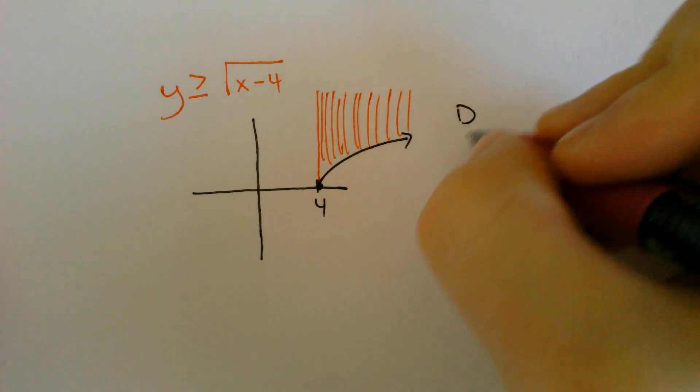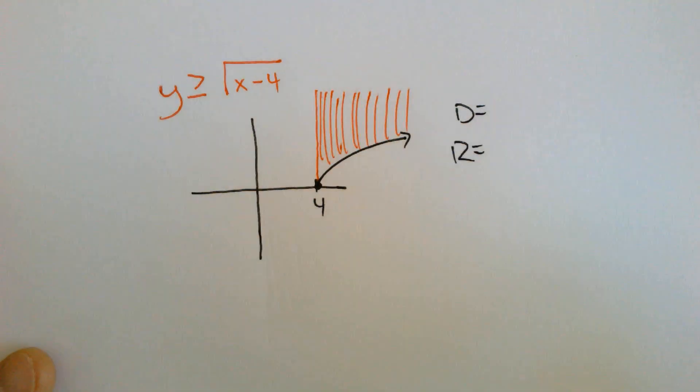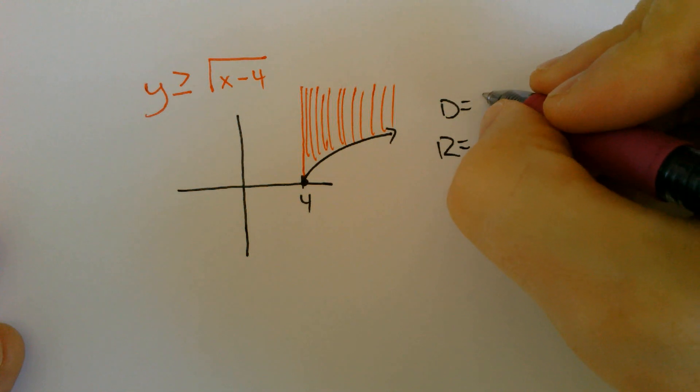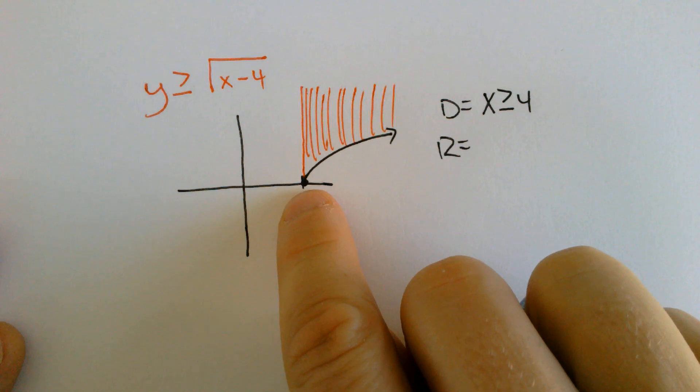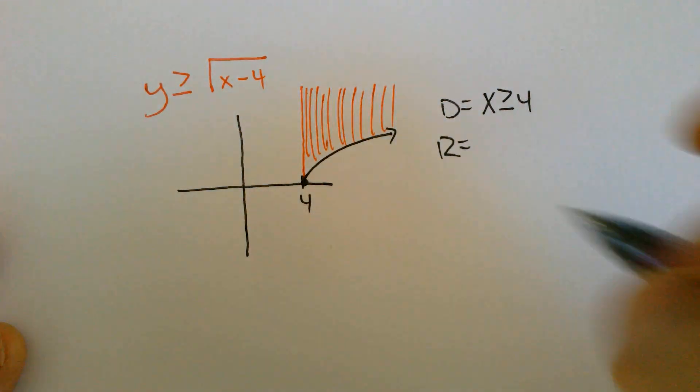So let's do the domain and range this time. Well, the domain this time is going to be including the 4 because it is filled in at the 4. On the last one, it was dotted, so it was hollow at the 4.